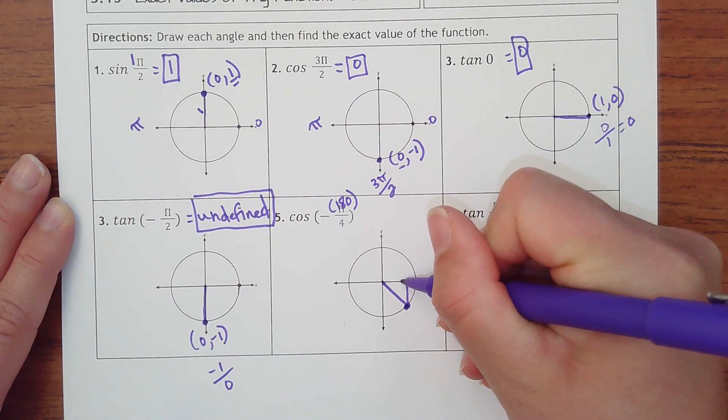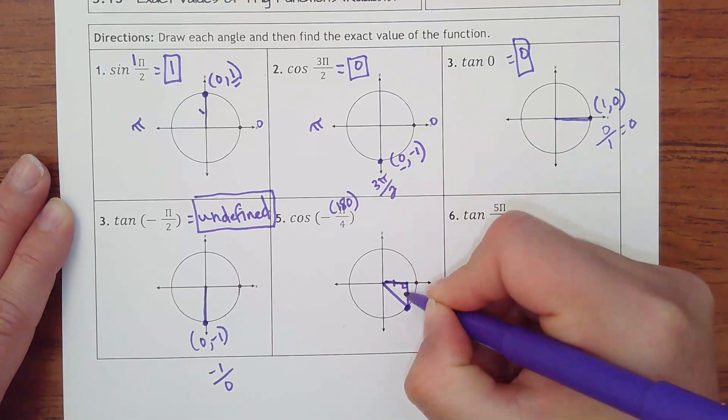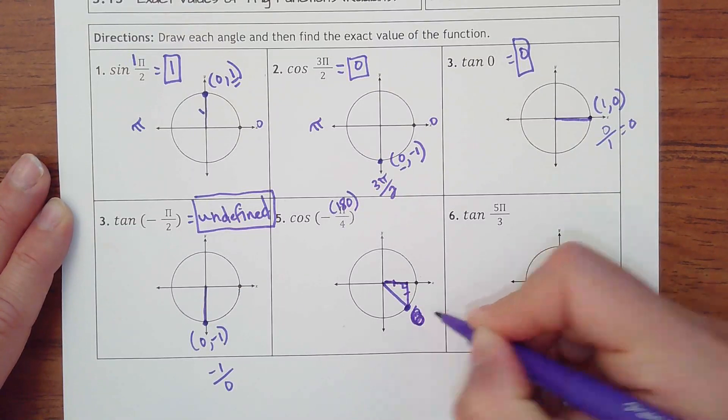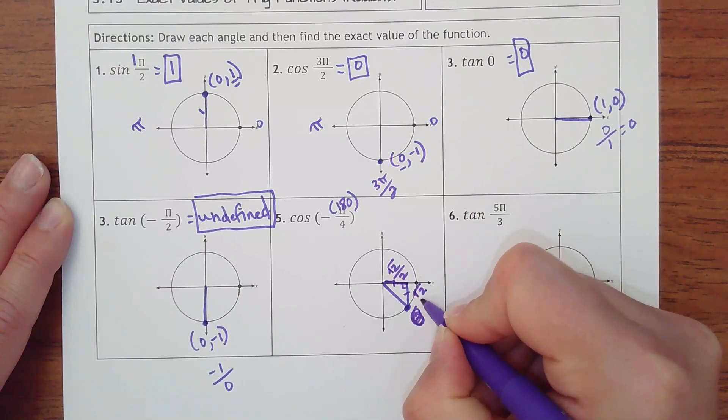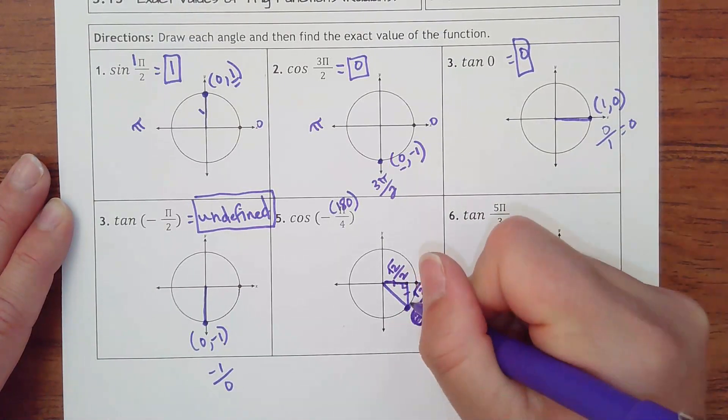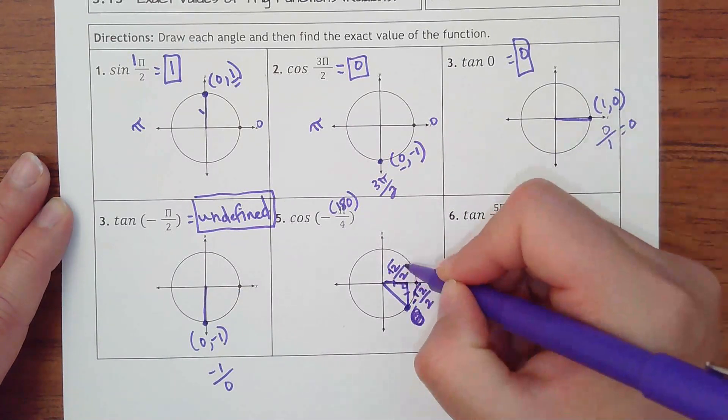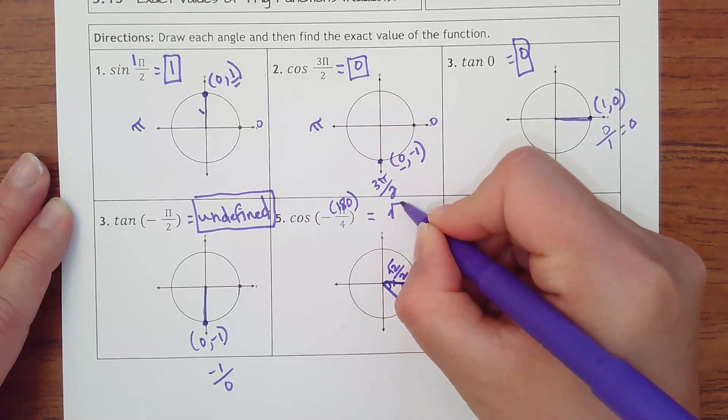That makes our triangle be here. Remember that our 45s mean that these legs are the same. And I'm hoping you remember that that is really, I'm making an ordered pair, but these are really square root of 2 over 2. And then this would be a negative because it goes down for the y value, but they only want the x, which is the adjacent leg to this angle. So that would be square root of 2 over 2.